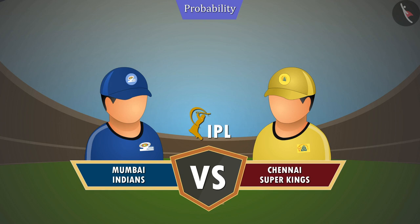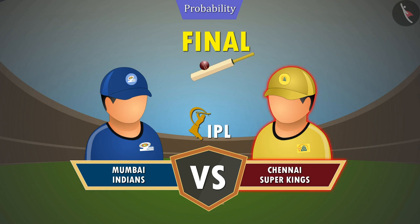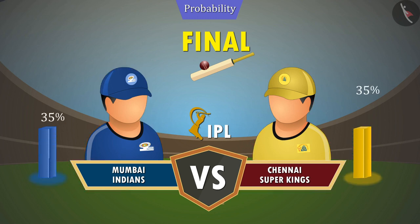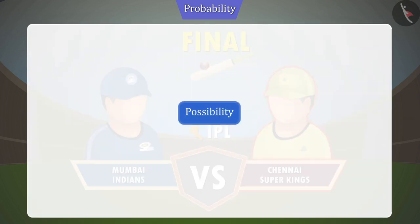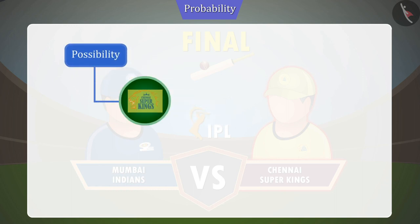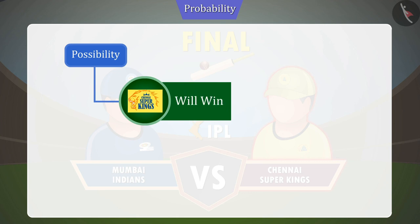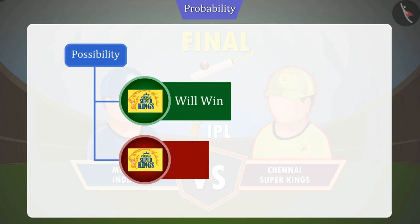In the previous video, we saw an example where both Chennai Super Kings and Mumbai Indians teams are going to play the final match of IPL. According to Raju, the team Chennai Super Kings are more likely to win. There are two possibilities at the completion of the match. First, Chennai Super Kings will win. Second, Chennai Super Kings will lose.